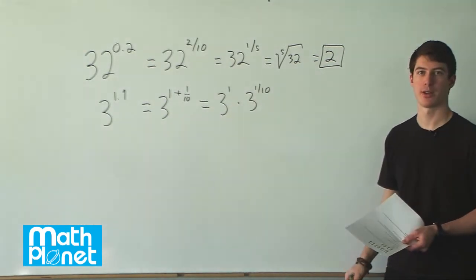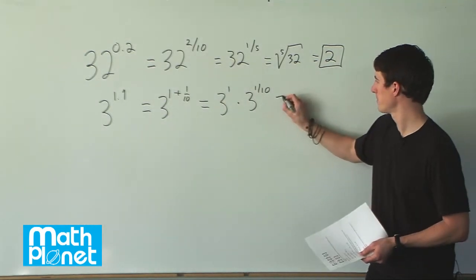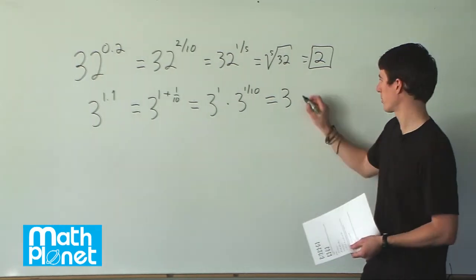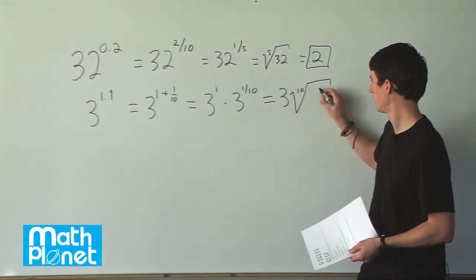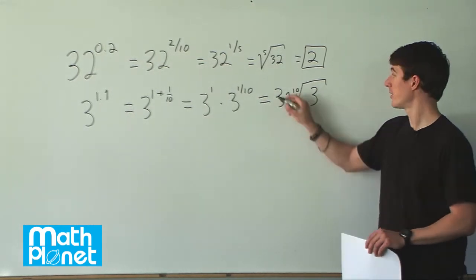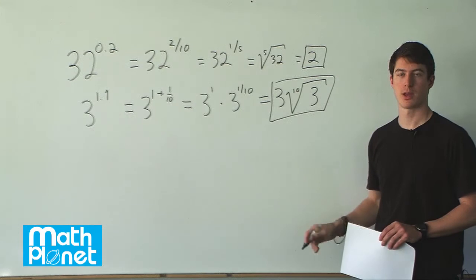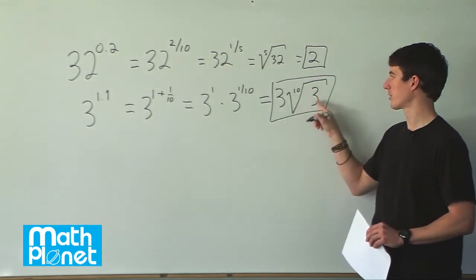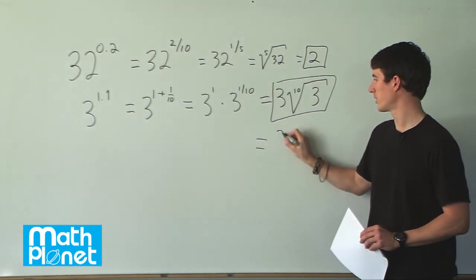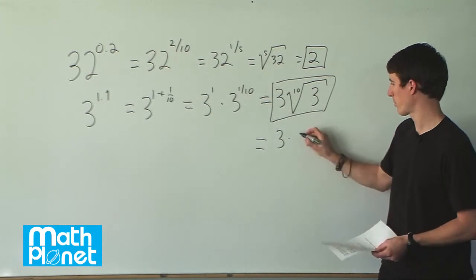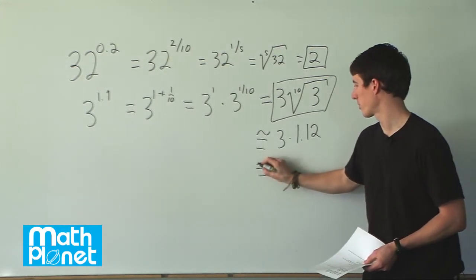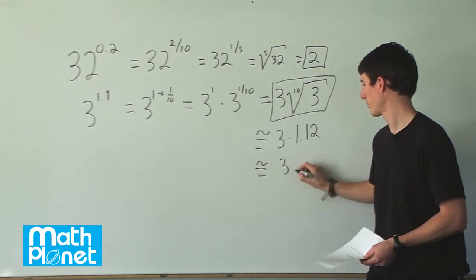This is already easier. 3 to the power of 1 is of course 3. And then 3 to the power of 1 tenth is the tenth root of 3. From here we can't solve for this exactly — this is as exact as we can get. We can find the approximate answer by taking the tenth root with a calculator. So if we say this is 3 times 1.12, then the approximate answer is 3.36.